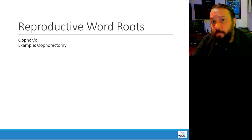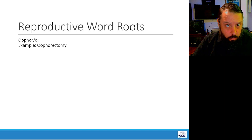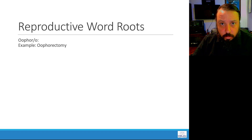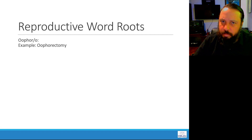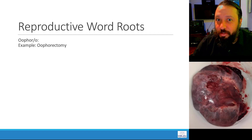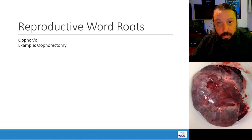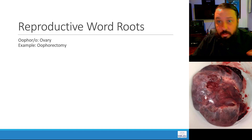Next is ooforo. You can see the oo prefix, which tells us it has something to do with eggs. An oophorectomy — the surgical removal of this organ — removes the structure that produces eggs, estrogen, and progesterone. Ooforo refers to the ovary, so oophorectomy is the surgical removal of an ovary.